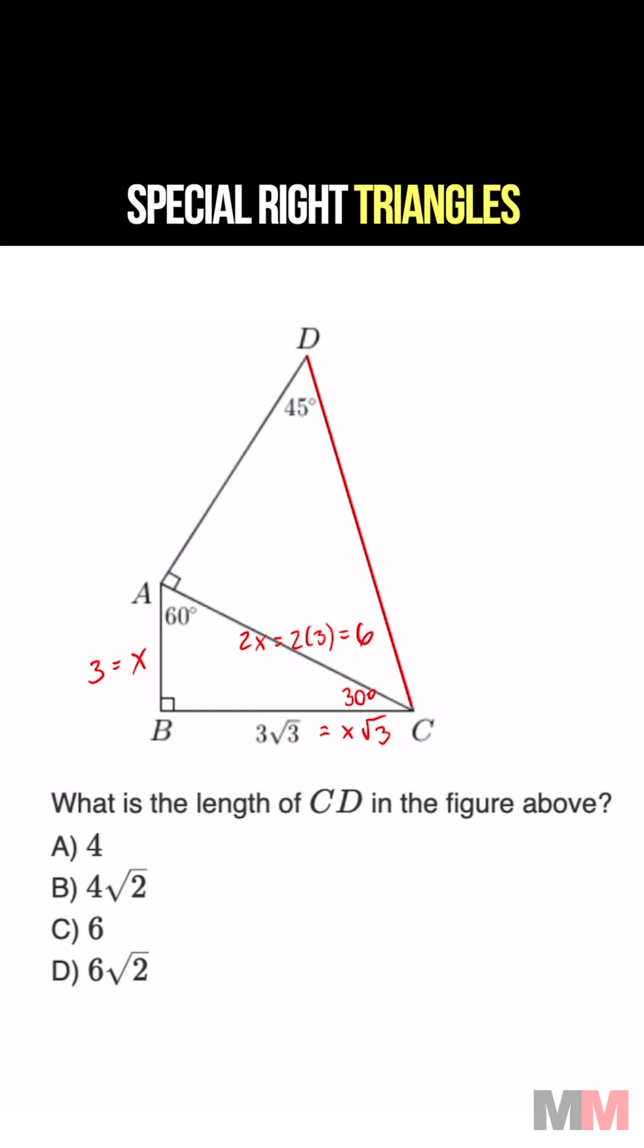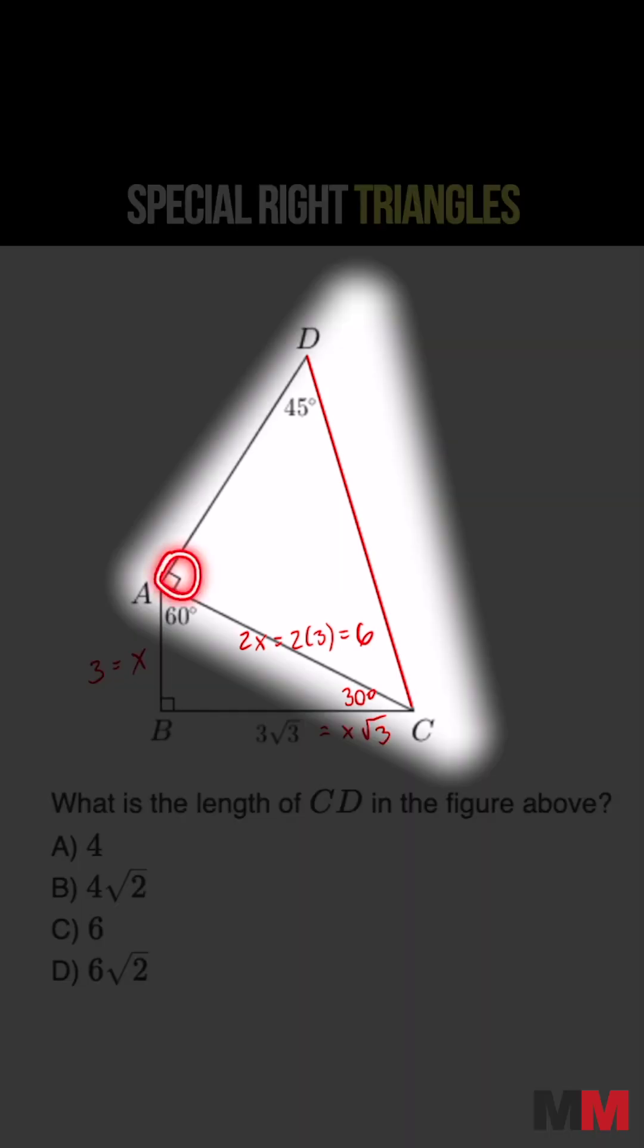So now let's focus on the bigger triangle. If that is 45 and this is 90, then we got ourselves a 45, 45, 90 triangle.